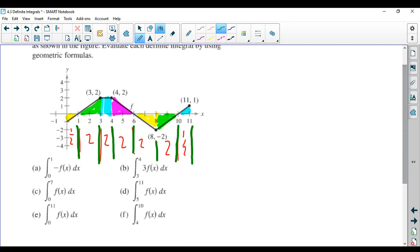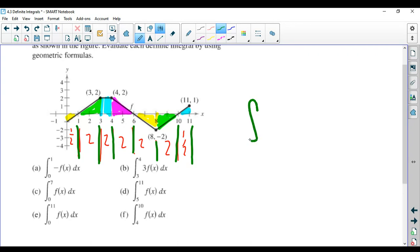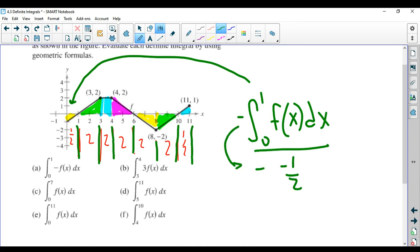So we're going to start with A. It's a good place to start. And it says the integral from zero to one of negative f(x). Now for integrals, like limits and like derivatives, you can factor out negatives. So that negative one can be factored out. And you can just think of this as the integral from zero to one of f(x). And you can see from zero to one, that's the area is one-half, but it's below the x-axis. So this integral would be negative one-half. But we have this negative factored out, so it's negative of a negative one-half, which is one-half. That's the answer.